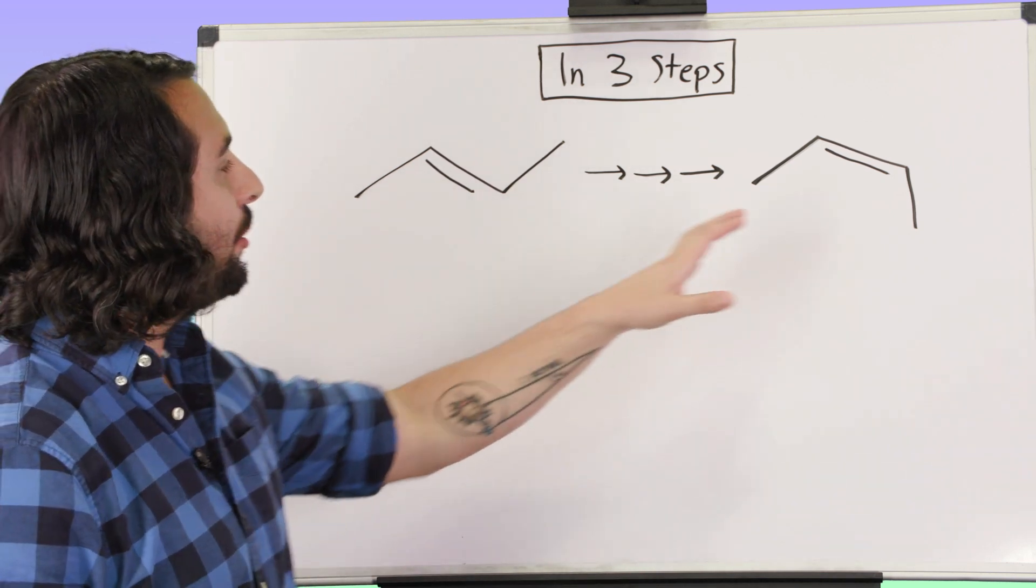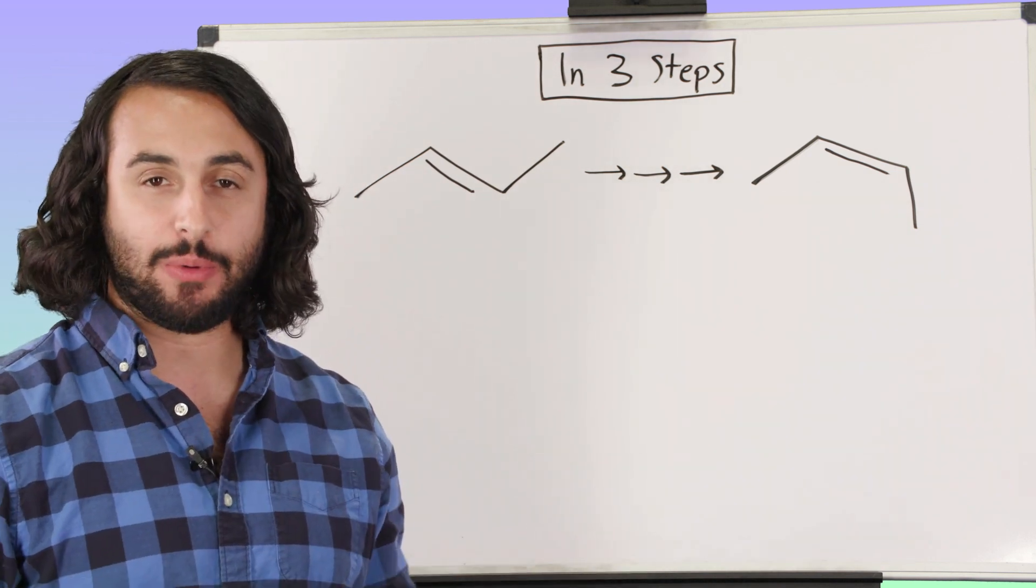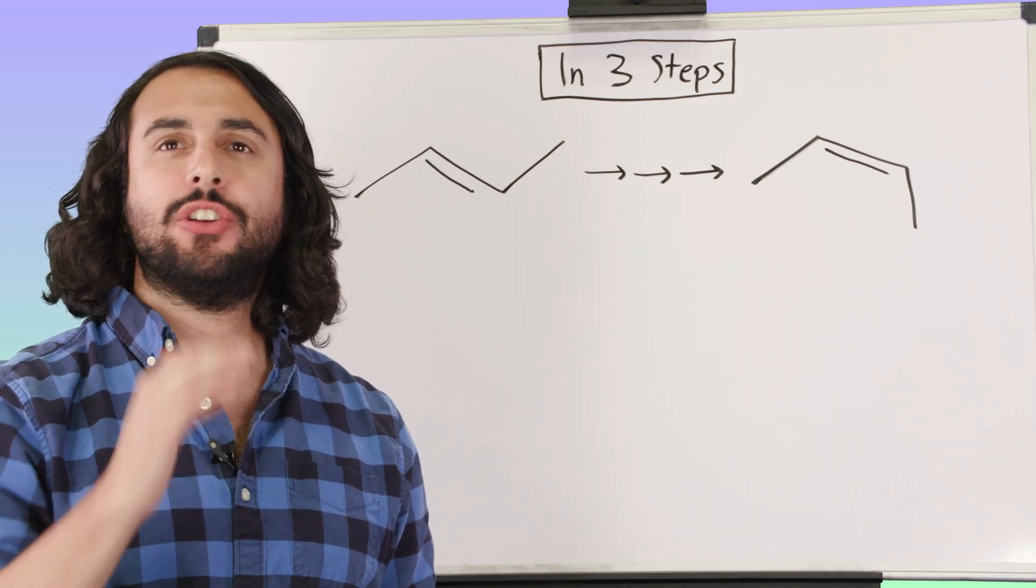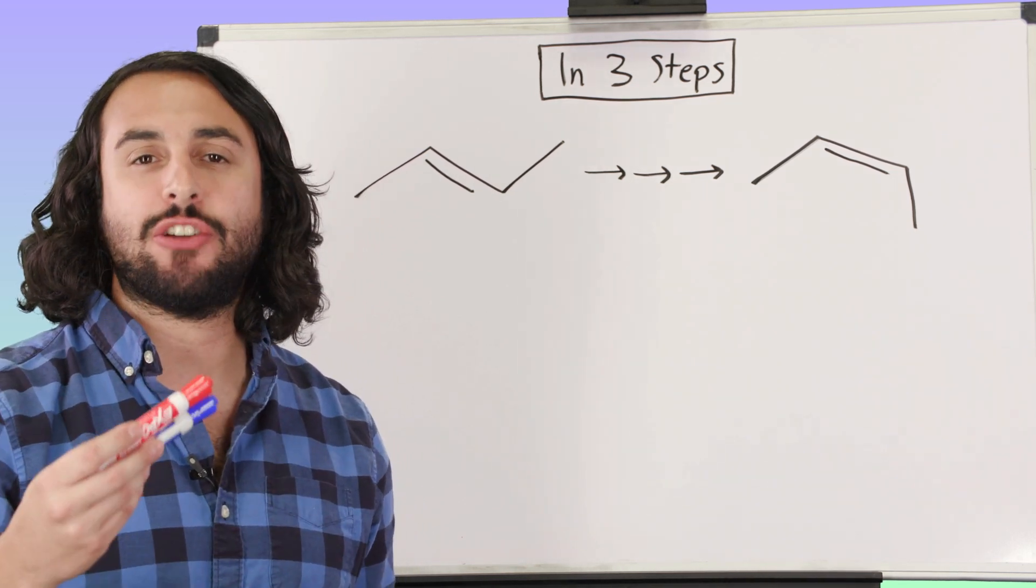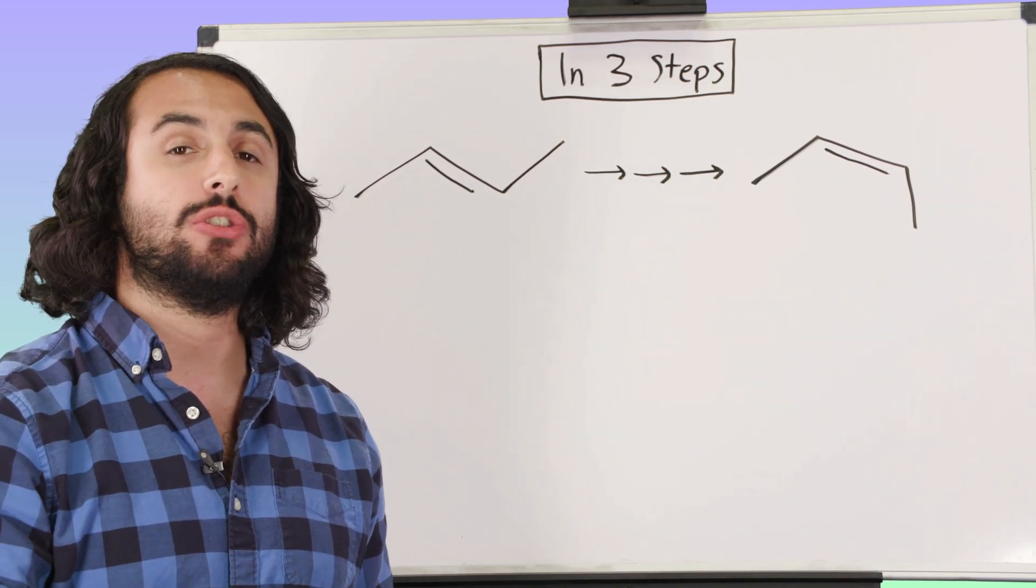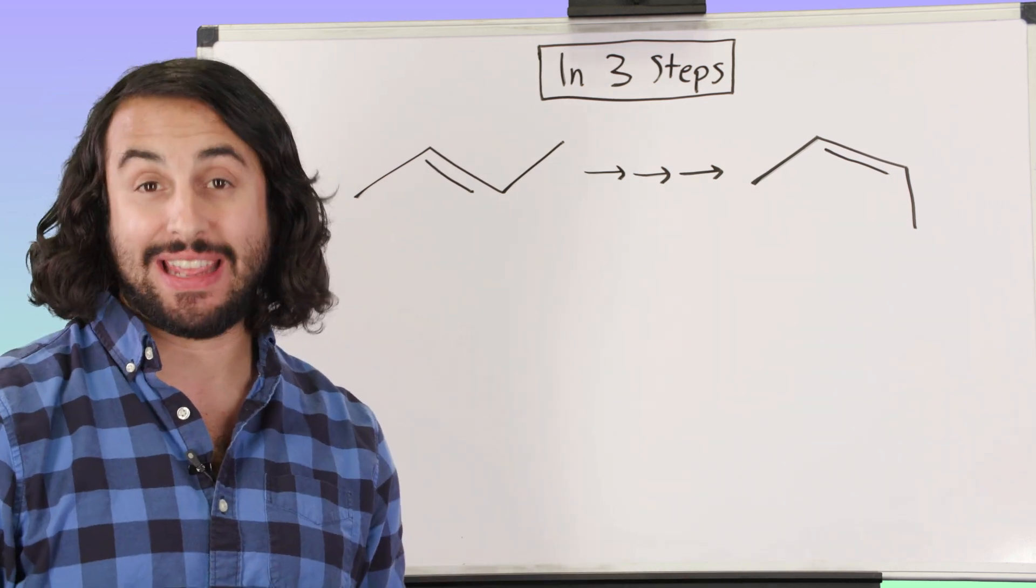We might look at the product and say, we want to get a cis-alkene, a Z-alkene. What ways do I know how to do that? Well, I know that I can do a selective hydrogenation of an alkyne. We know how to do hydrogenation of an alkyne to specifically get a Z-alkene.